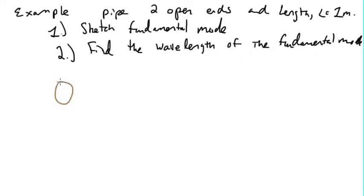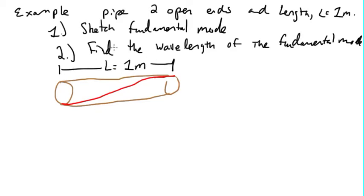So if we draw a sketch, a pipe, two open ends, we know at the endpoints the derivative has to be equal to zero, so it's got to be flat. It's going to be flat there and there, and then we just connect the two. So it kind of looks like an S. This is L equal to one meter. This is a sketch of the fundamental mode. It's got one node and two antinodes.